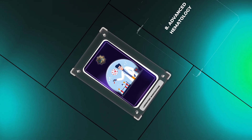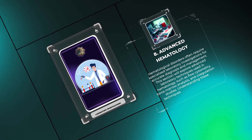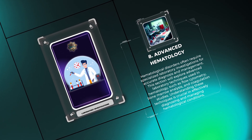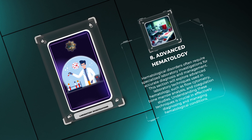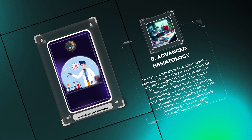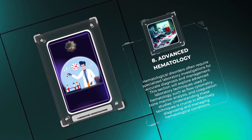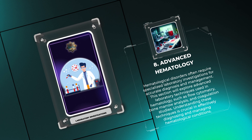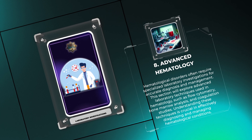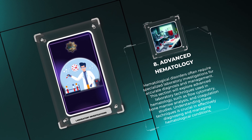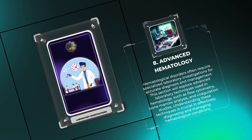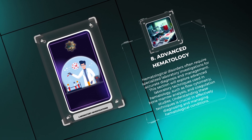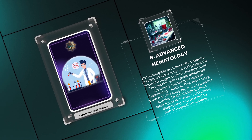Hematological disorders often require specialized laboratory investigations for accurate diagnosis and management. This section will explore advanced laboratory techniques used in hematology, such as flow cytometry, bone marrow analysis, and coagulation studies. Understanding these techniques is crucial in effectively diagnosing and managing hematological conditions.